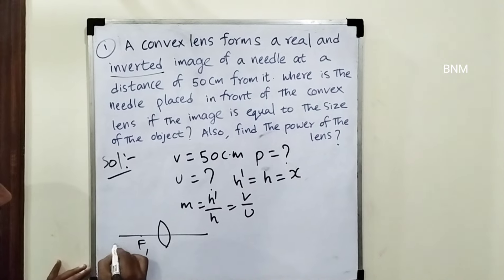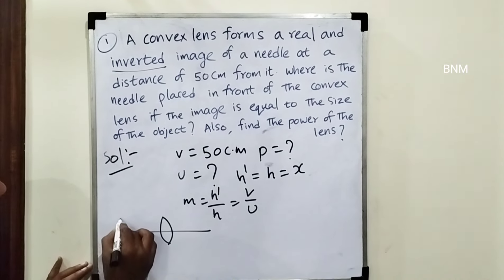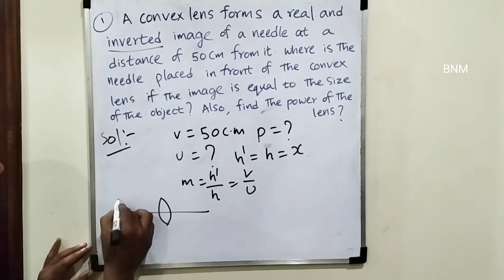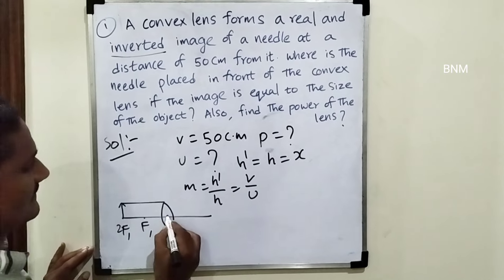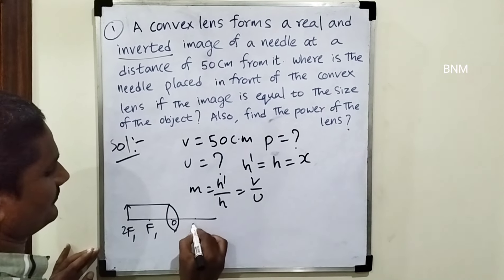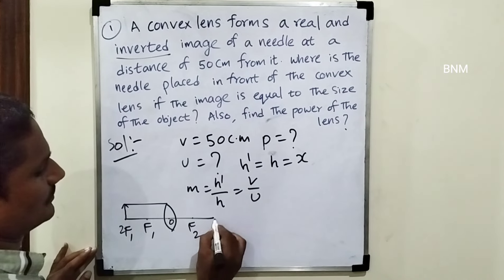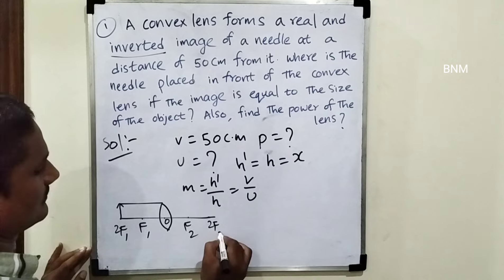This is the convex lens. Here it is the 2F1. If we have 2F1, we have the equal size of the object center. So this is the object center — F2, 2F2.